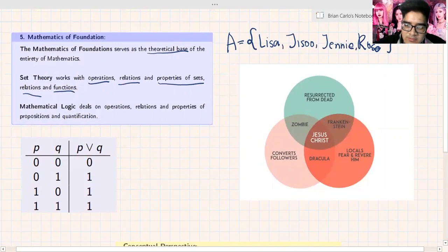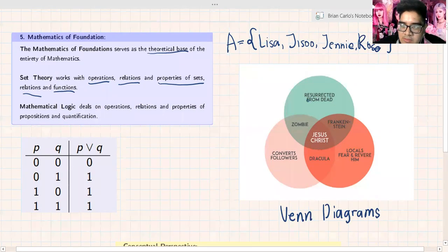Another type of intuition in set theory is what we call Venn diagrams. Venn diagrams can actually serve as representations of sets. For example, we have sets that contain resurrected from the dead - that's the blue. Converts followers - that's the pink. And the red one, locals fear and revere him. Now, zombies resurrect from the dead. Frankenstein even resurrected from the dead. Converts followers - if you are bitten by a zombie, you'll become a zombie as well. Dracula - if you've been bitten by Dracula, you might die or you might become a vampire as well.